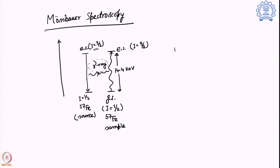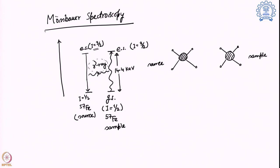Typically, the source and the sample are separated. They are put in a solid matrix or lattice so that there is minimal translational change during gamma ray exchange, because gamma ray is very high energy and would impart some momentum backwards. Similarly, the sample receiving the gamma ray has a tendency to move forward. To stop those changes, which would disrupt the resonance condition, we put them in a solid matrix or lattice.